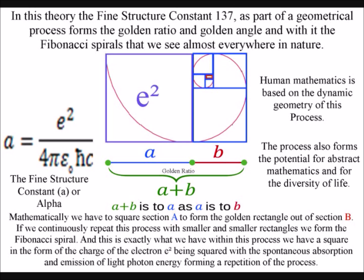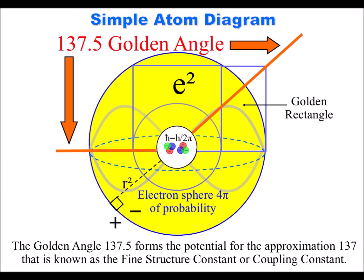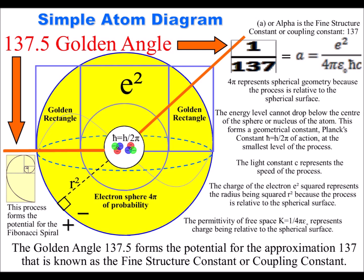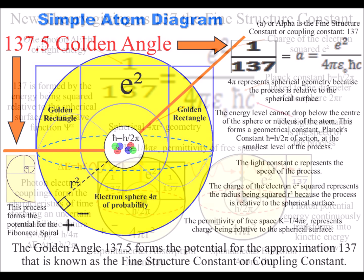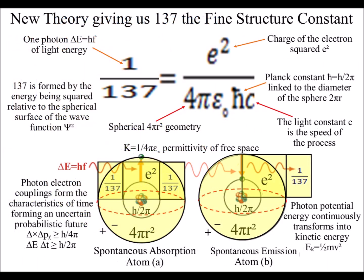This geometrical process also forms the golden angle 137.5, which in the mathematics of quantum mechanics is seen as the fine structure constant or coupling constant that is linked to the charge of the electron squared, the Planck constant and the speed of light C.